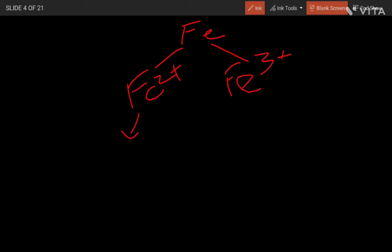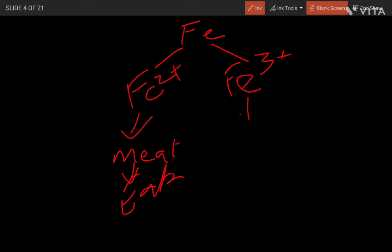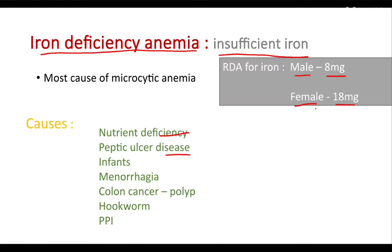Fe3+ is provided through plant sources, and for its absorption it has to be converted into Fe2+. In our stomach, when we take Fe3+ form of iron, it is converted in the presence of acid to Fe2+, which is then absorbed in our duodenum and proximal jejunum.